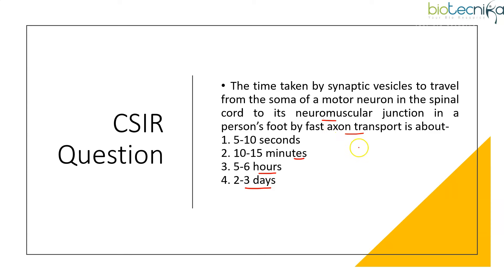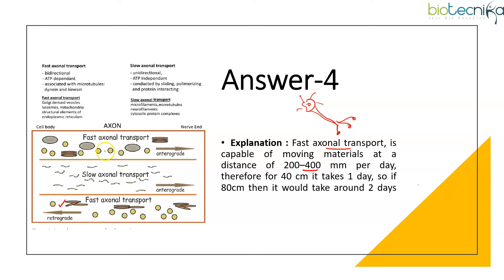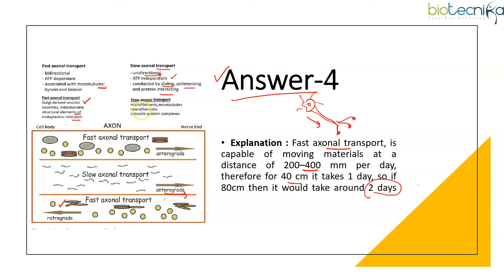Fast axonal transport is bidirectional, ATP-dependent, and associated with microtubules, using dynein and kinesin. Golgi-derived vesicles, lysosomes, and mitochondria use this transport. Slow axonal transport is only unidirectional — that is why we calculate for 80 cm, taking around two days. Slow axonal transport is ATP-independent and occurs by sliding, polymerizing, and protein interaction, used by neurofilaments, microfilaments, microtubules, and cytosolic protein complexes.